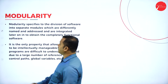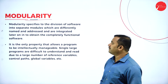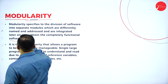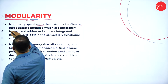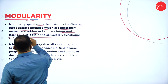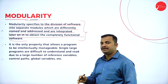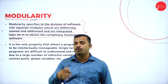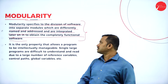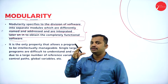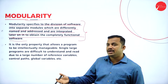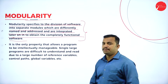Modularity is the third phase of this design principle. We have already partitioned into different problems — problem 1, problem 2, and so on. Modularity specifies the division of software into separate modules which are differently named and addressed, and are integrated later on to obtain a completely functional software. This is the divide-and-conquer strategy: divide the big problem into smaller sub-problems, then combine the solutions of all smaller sub-problems to get an integrated complex solution.